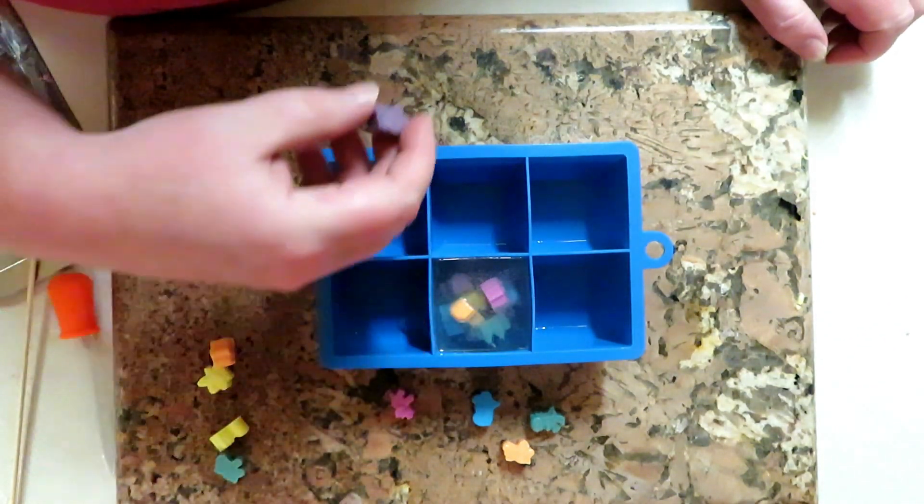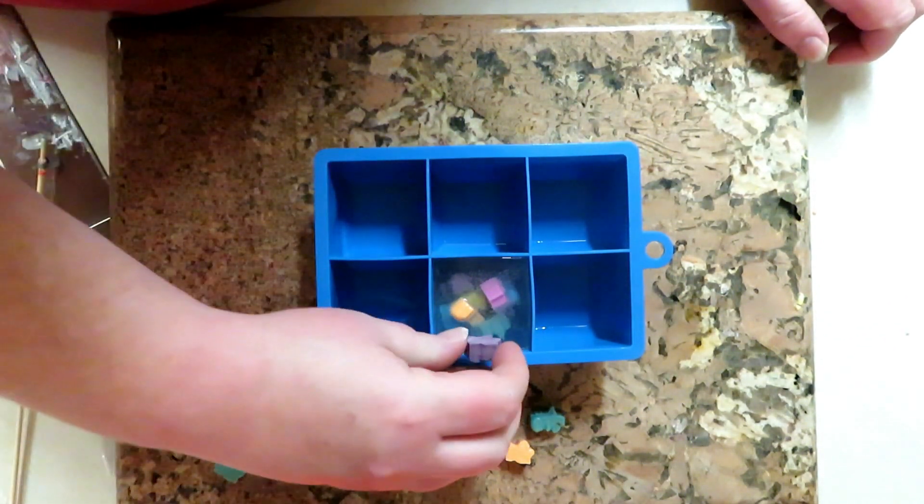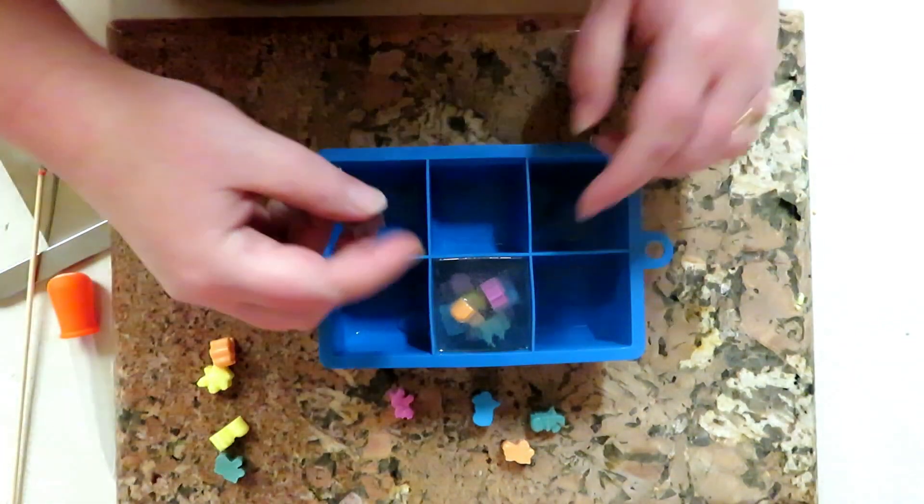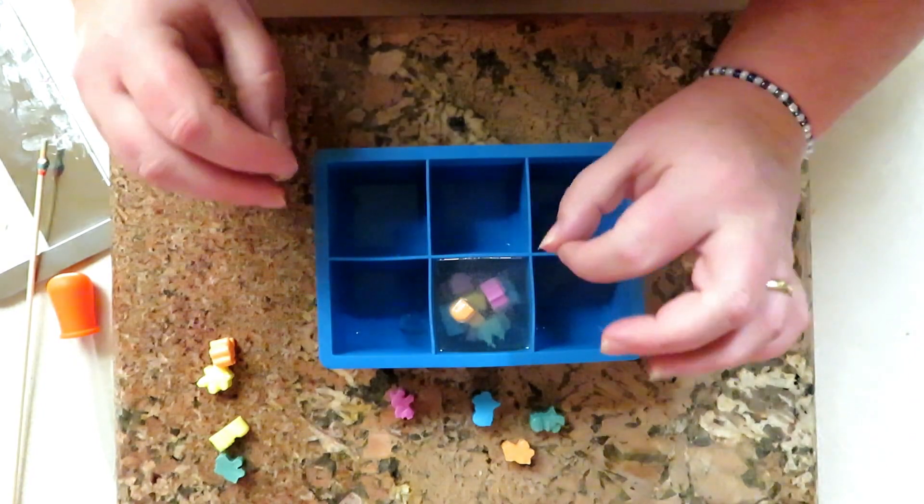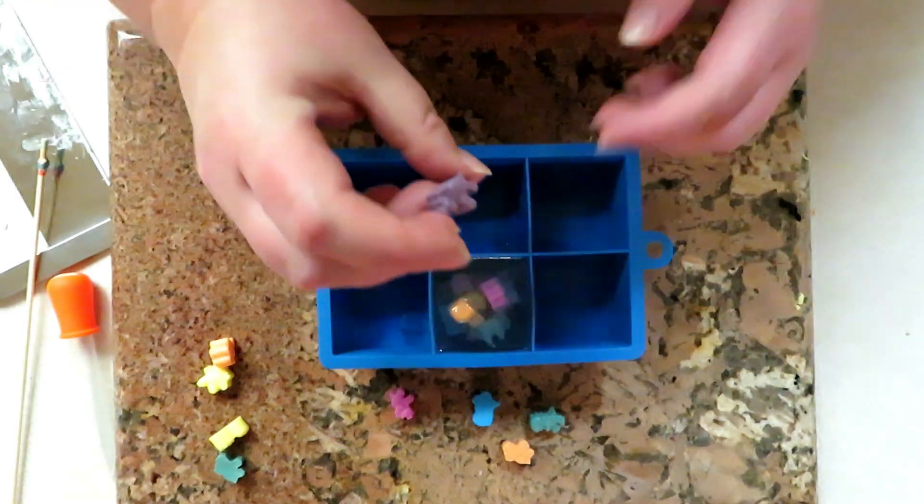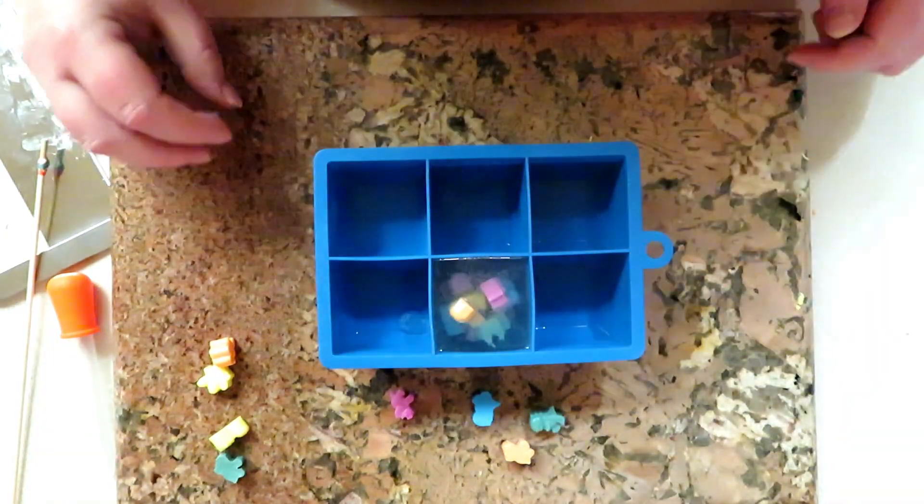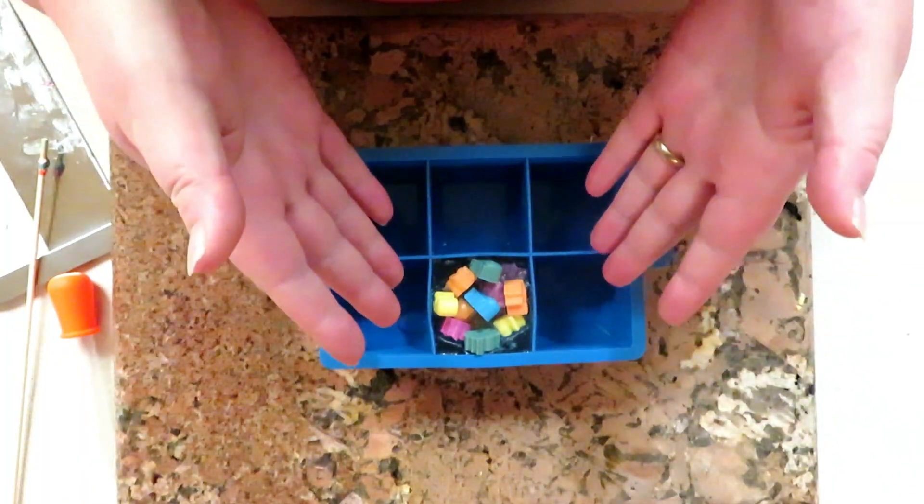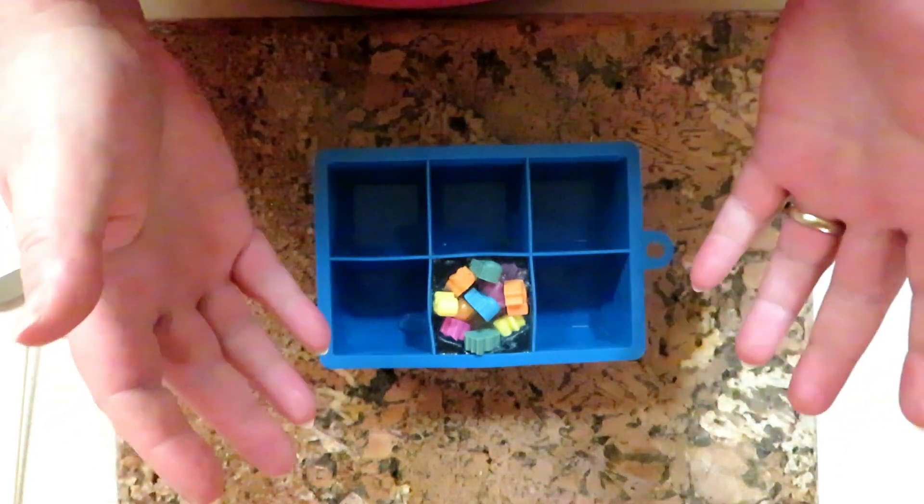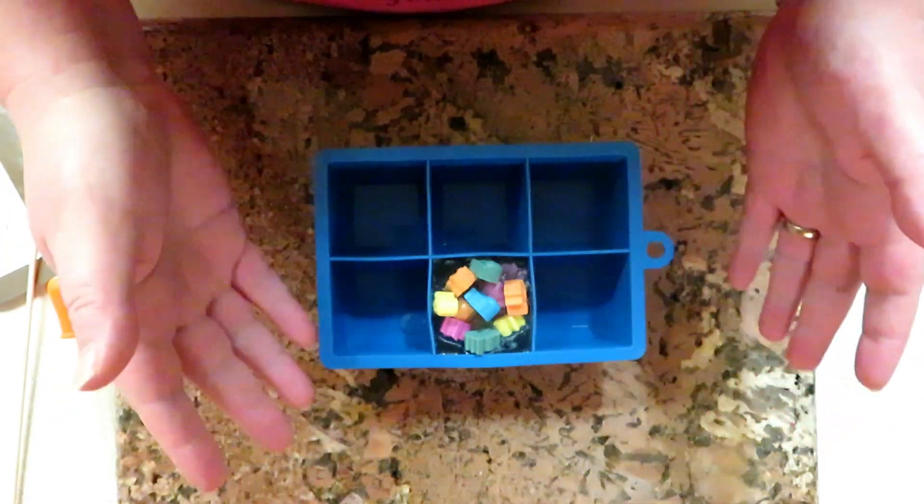And I just kind of start piling the dinosaurs on the inside and what I'm gonna do is start putting the dinosaurs on the top once this sets just enough. I don't want a skin on it, I just want it to cool down just enough to where I could start placing them in there so they'll stay. Basically what it's gonna turn out like is just a big giant cube of clear soap with a bunch of dinosaurs inside of it.